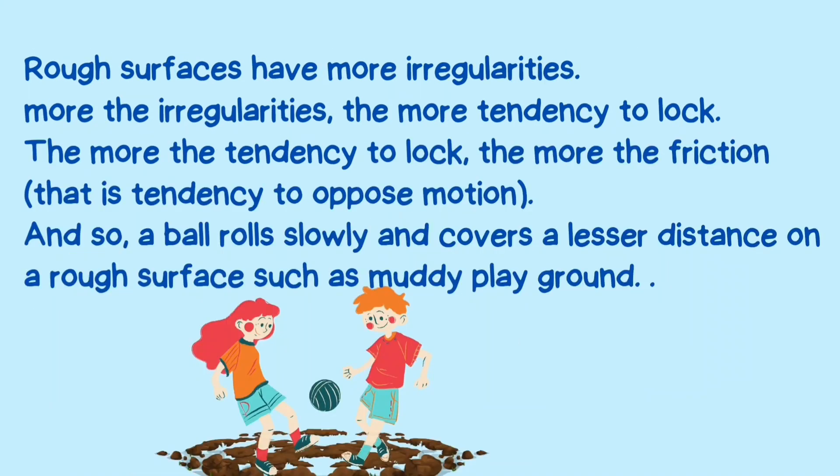Rough surfaces have more irregularities. The more the irregularities, the more the tendency to lock, and therefore the more the friction — that is, the greater the tendency to oppose motion. So a ball rolls slowly and covers a lesser distance on a rough surface, such as a muddy playground. This means that to get the ball rolling, we have to apply a force greater than the frictional force offered by the ground.